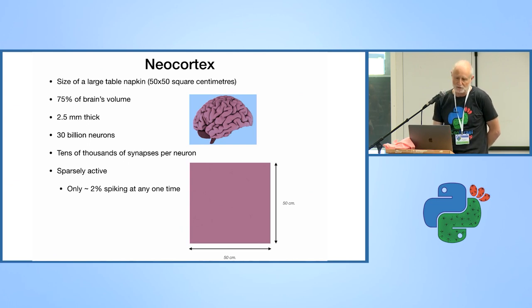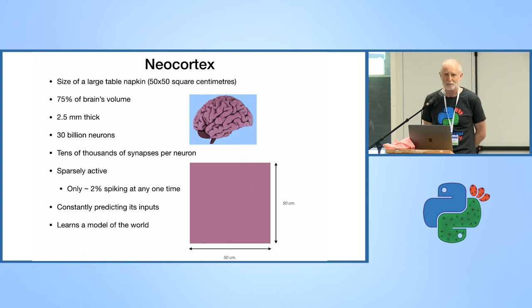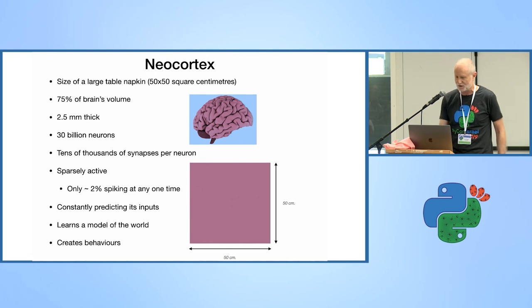So what does the neocortex do? First of all, it's always predicting its inputs. As I look around the room, I'm predicting I'm going to see a lot of people, and that prediction falls down, so I have to update my model, which is another thing that the neocortex is doing. And it's also generating behaviors like I'm doing at the moment - I'm giving this talk.